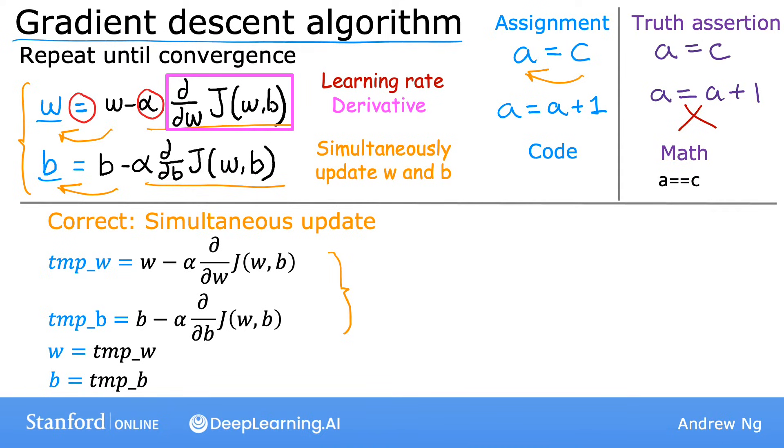Now, one thing you may notice is that this value of w is from before w gets updated. Here, notice that the pre-update w is what goes into the derivative term over here.